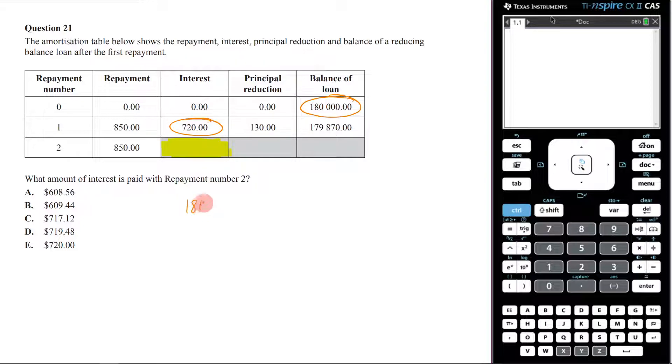We've got $180,000 timesing it by some interest rate. And we know that the interest that is going to come from that is 720. So all we're doing here is going, all right, what's 720 over 180? 180,000, 180,000.